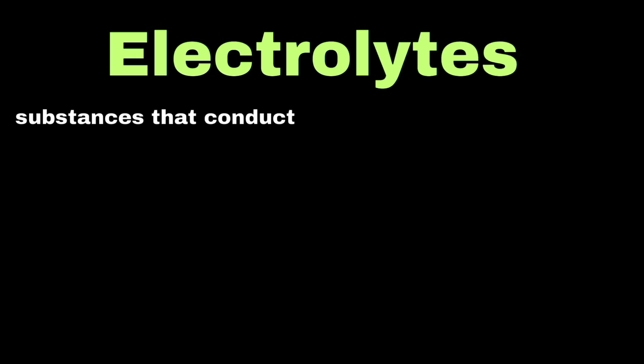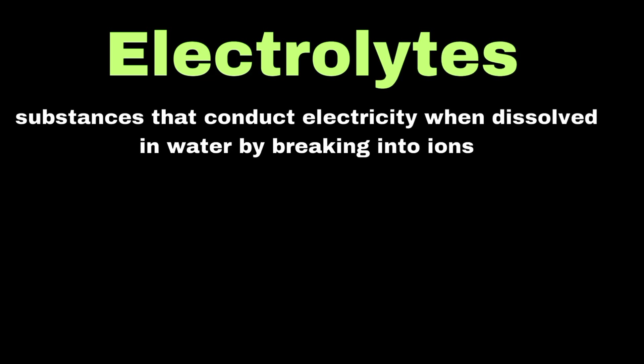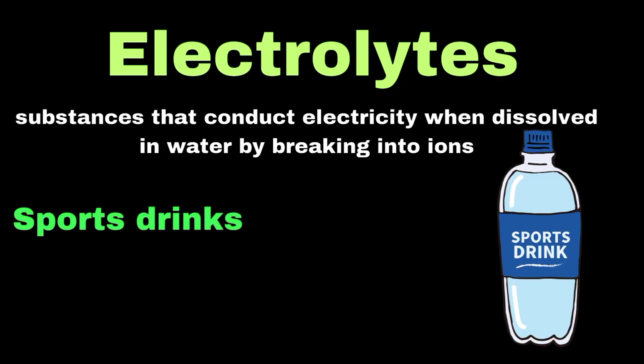Now we can explore the concept of electrolytes. Electrolytes can be defined as substances that conduct electricity when dissolved in water by breaking into ions. Let's look at sports drinks. These beverages contain salts like sodium chloride and potassium chloride that dissolve into ions, making the solution conduct electricity. This is why these drinks can help replace the electrolytes lost through sweating.